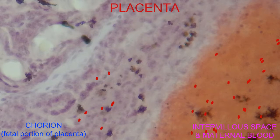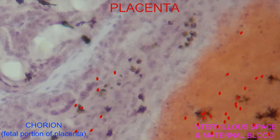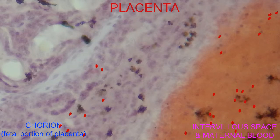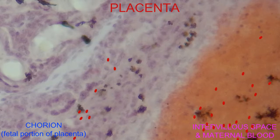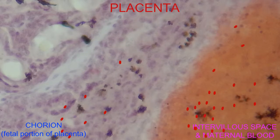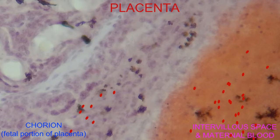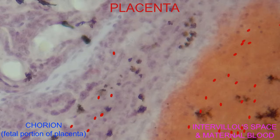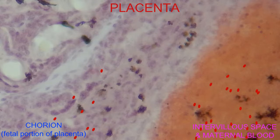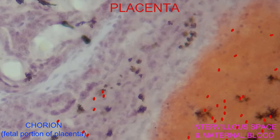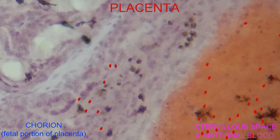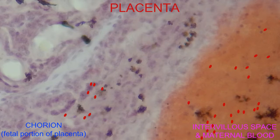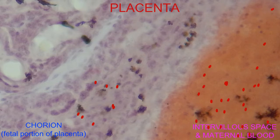While it passes through these intervillus spaces, it bathes over the fetal cells of the chorion, the fetal part of the placenta. And although maternal and fetal blood do not mix, the proximity of the maternal blood and the fetal blood within the blood vessels in the chorionic villi is so close that diffusion of many substances can pass.